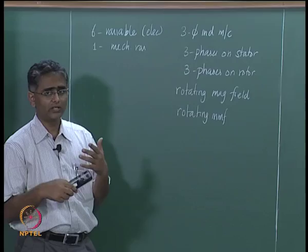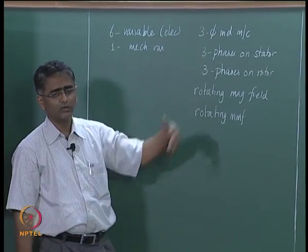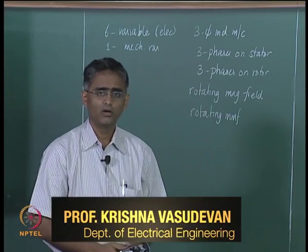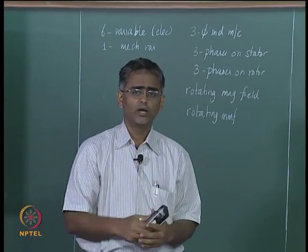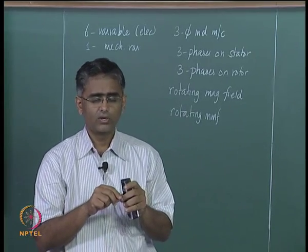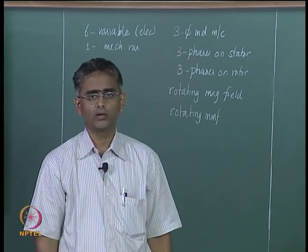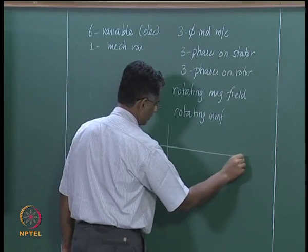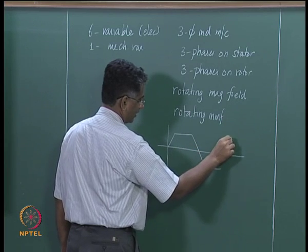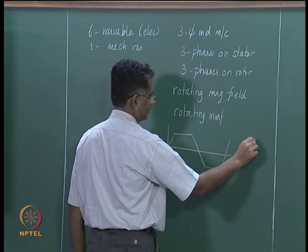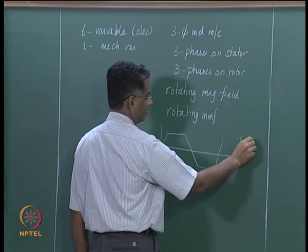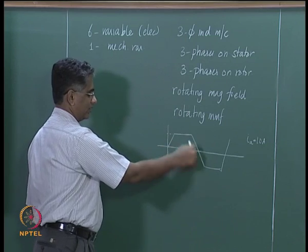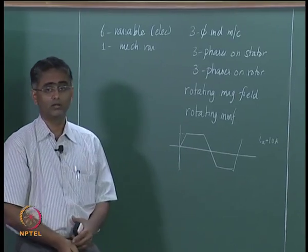This rotating MMF waveform is the net excitation of all three phases. To derive the inductance expressions, we looked at the MMF distribution around the circumference of the machine in the air gap — how the MMF generated by one phase is distributed around the air gap. This MMF waveform is a trapezoidal waveform for a distributed winding, for a specific current IA, having a certain amplitude and a certain region where it decreases, depending on how many turns are wound in that phase.